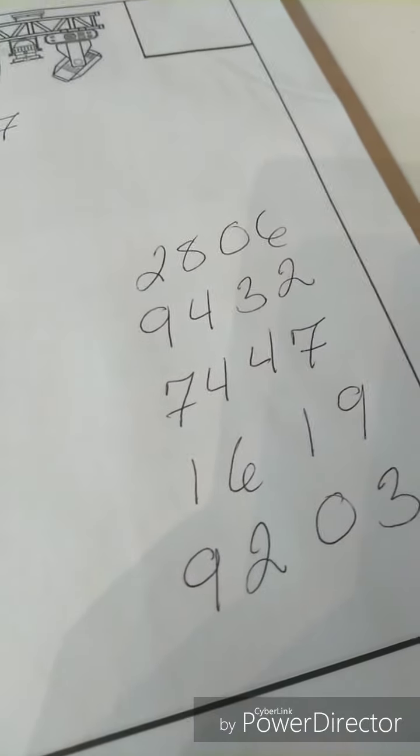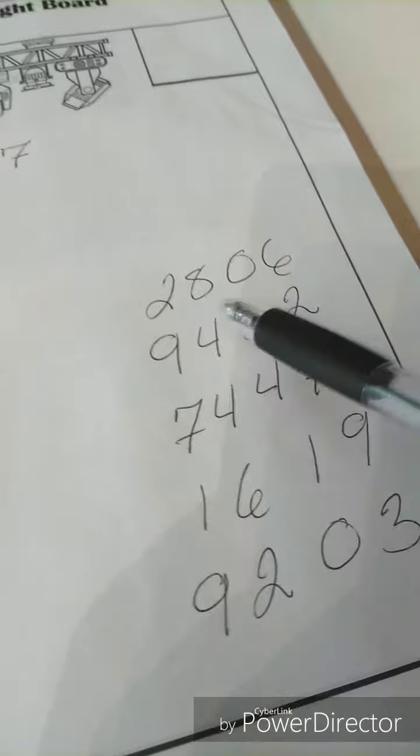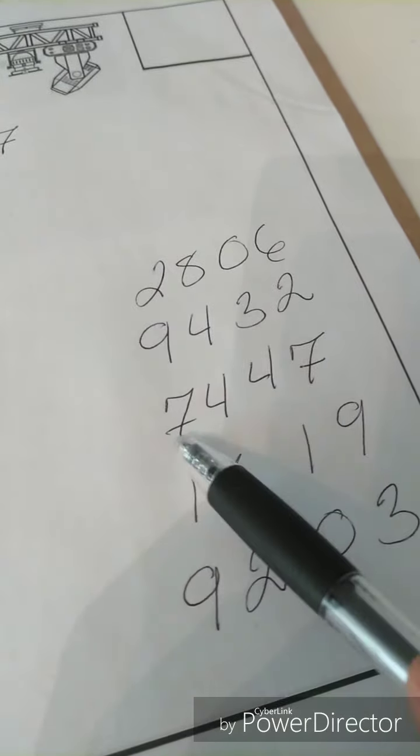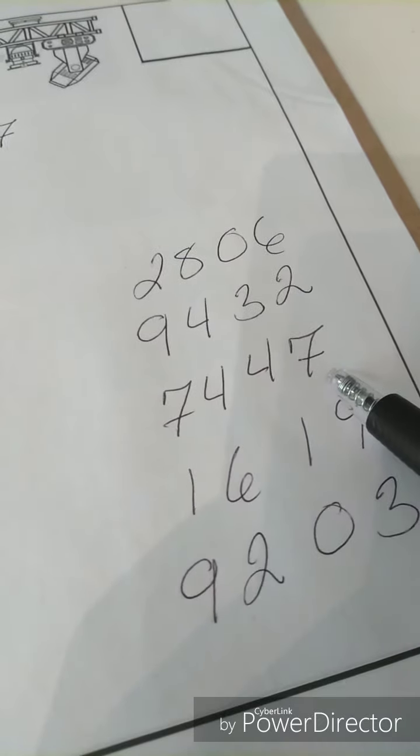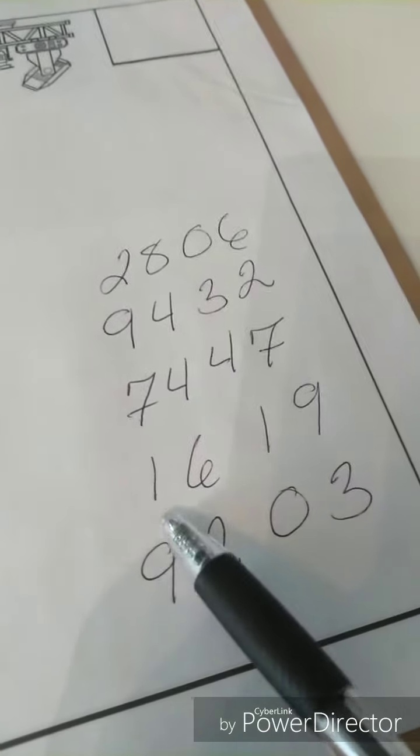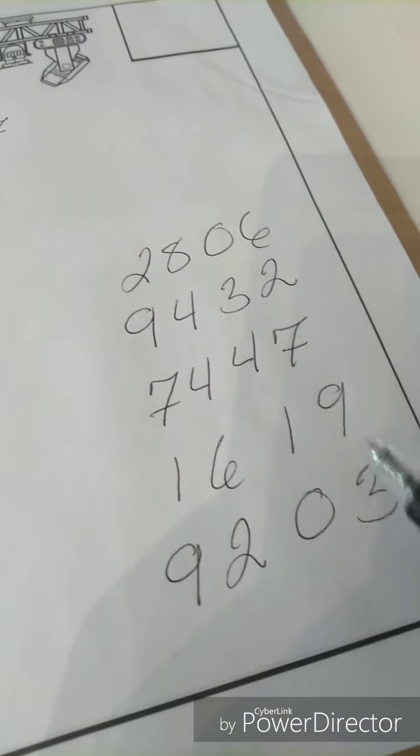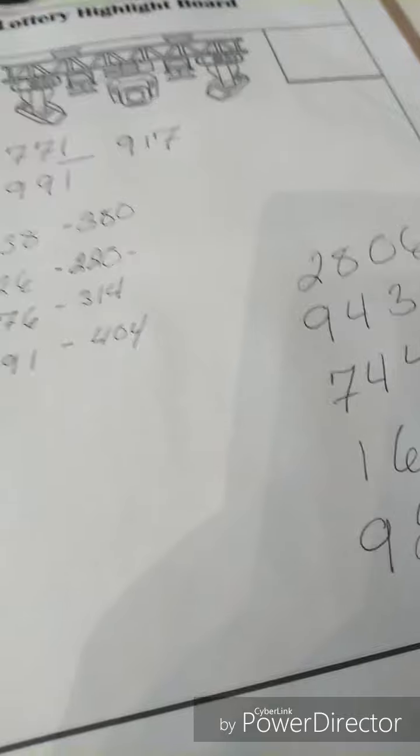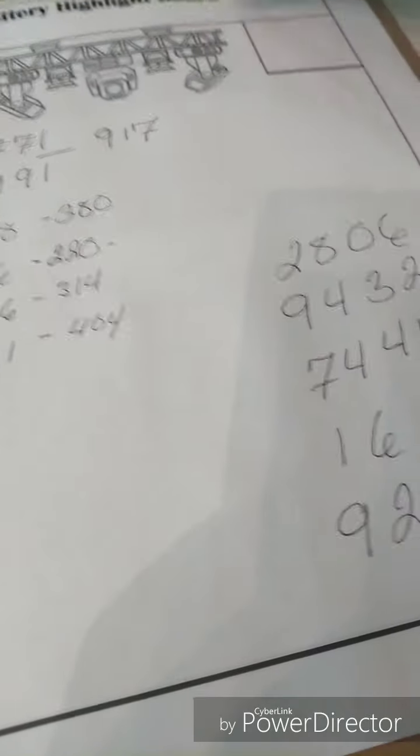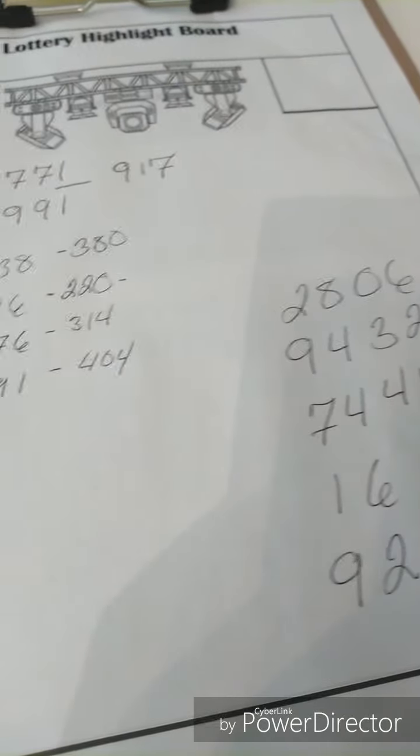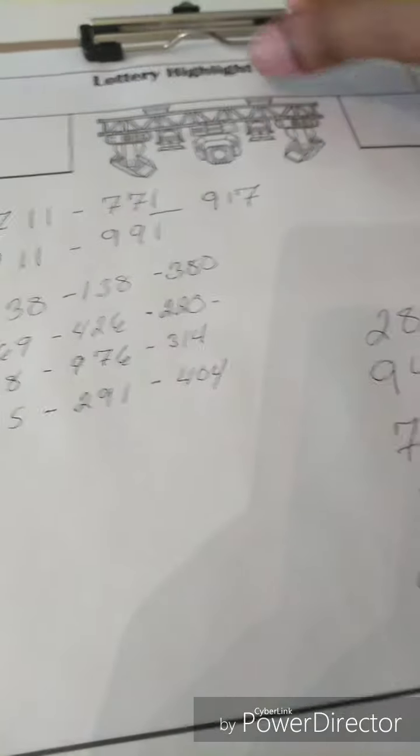Let's move on to these Pick 4 Cash 4. You got the 2806, the 9432, the 7447, which is basically 2929. You got your 1619 and the 9203. I'm just putting these on the highlight board. You can rewind this part of the video at any time and check it out. You can see how close these numbers fall to them. I am expecting them.